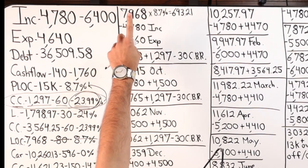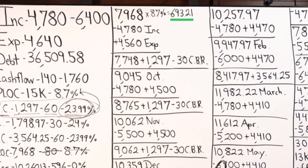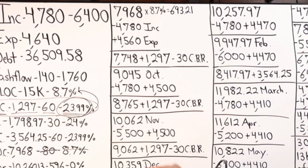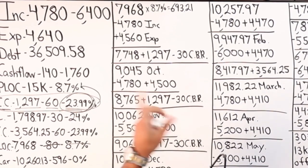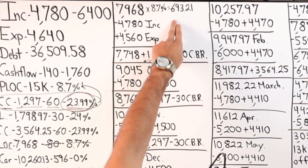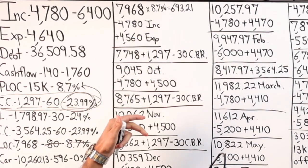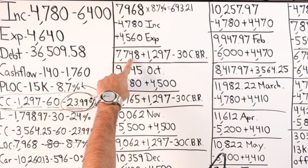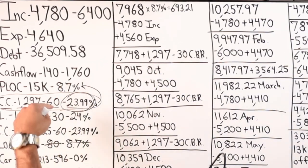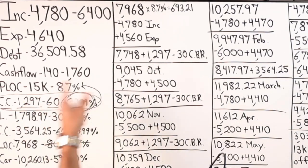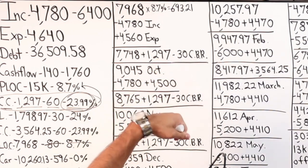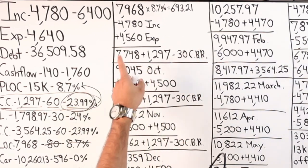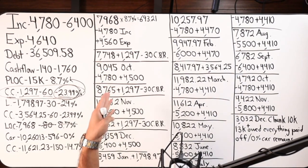The most interest you could possibly pay in a 12-month period at $7,968 and 8.7% is $693.21 — and that's only if you paid nothing but interest. That's not what's happening here. We're going to drastically cut that rate in half, bringing the net cost below 4% throughout the entire scenario. Income went in, expenses came out, leaving us around this balance. They also got $30 in cashback rewards on the credit card, which reduces their actual output.